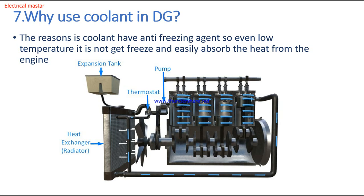Seventh question: why do we use coolant in a diesel generator? Coolant has anti-freezing properties, meaning it does not freeze even at low temperatures. It also easily absorbs heat from the engine. You can see this picture — from the radiator tank, coolant moves from the bottom into the diesel engine cylinder side, then returns through a thermostat back to the radiator tank. Inside the radiator tank there is a heat exchanger, and the radiator fans cool the heated coolant using atmospheric air, and the same coolant returns to the same process.